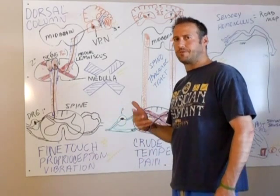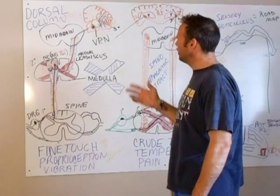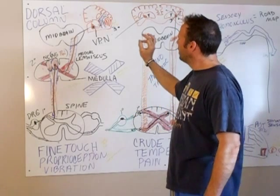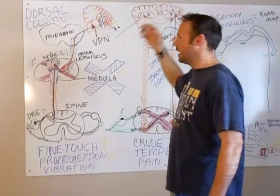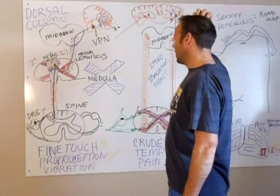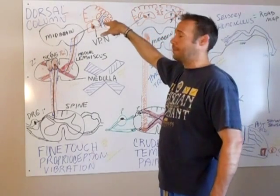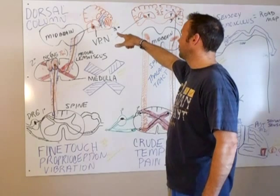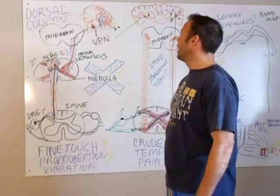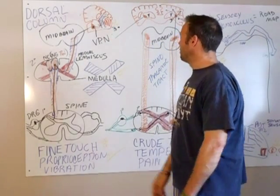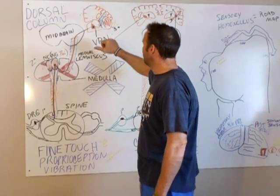Now, depending on what textbook you read, there's some variation. Some mention the internal capsule, some don't, but I would stick with it going through the internal capsule after it synapses in the VPL, and then it goes out from there.